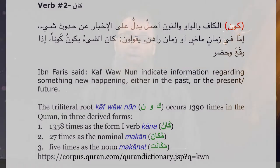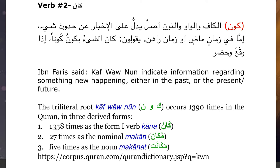The second verb and its root letters are: Al-Kaf, Al-Wa, Al-Noon. Ibn Faris rahmatullahi alayhi says: 'Aslun yadullu ala al-ikhbari an huduthi shayyin, imma fee zamanin madin aw zamanin rahin.' Yaqulun kaana shay'u yakunu kawnan idha waqa'a wa hadhar. So he is basically telling us that these three root letters of Kaf, Wa, and Nun indicate information regarding something new that is happening, either in the past or in the present.